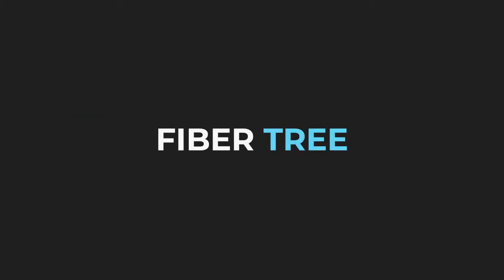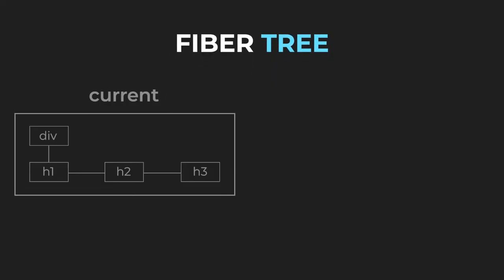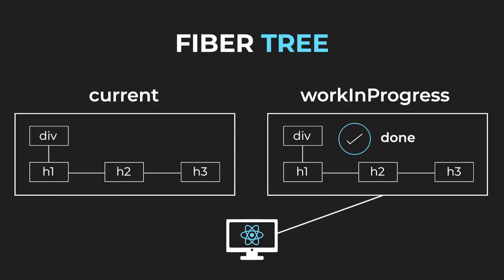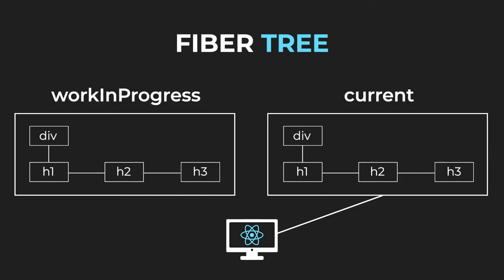Now is a good time to return to the fiber tree. There are in fact two trees: the first one is called the current tree and the second one is called the work in progress tree. The current tree is what's currently on the screen, so React can't make changes to it because it could result in an inconsistent UI. React instead makes changes to the work in progress tree and simply swaps pointers at the very end. The work in progress tree becomes the current tree and vice versa. This is similar to the double buffering technique used by video game programmers. React does the same thing with the fiber trees during the commit phase.